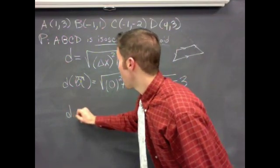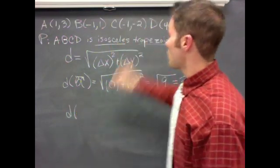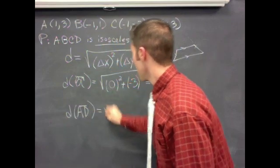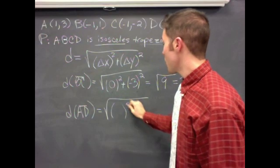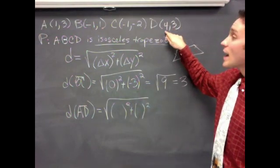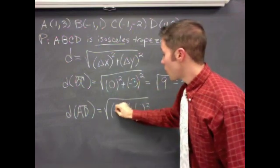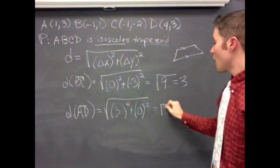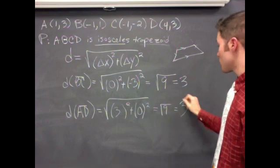Then let's do the distance of the other non-parallel side, which was AD. So giant square root of something squared plus something squared. Delta X is four minus one, three. Delta Y is three minus three, zero. So we see we get radical nine, which equals three.